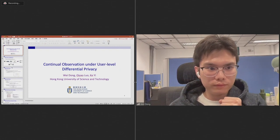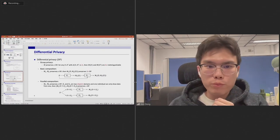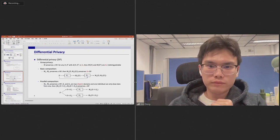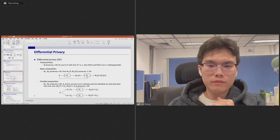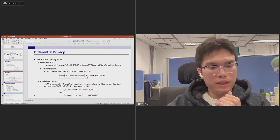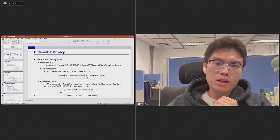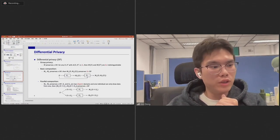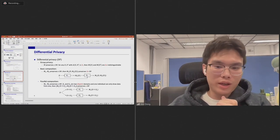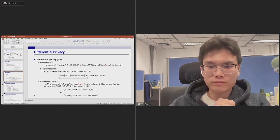For user level differential privacy, each user has multiple records. For group differential privacy, you protect more than one record. What's the difference? Yes, actually for group privacy you have to know the number of records each user can have, and that number should be known before. But for user-DP you do not know that number. I mean each user can correspond to arbitrary number of tuples. I think that's the key difference.